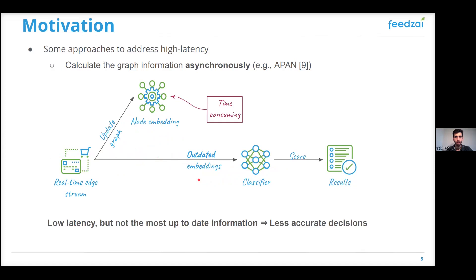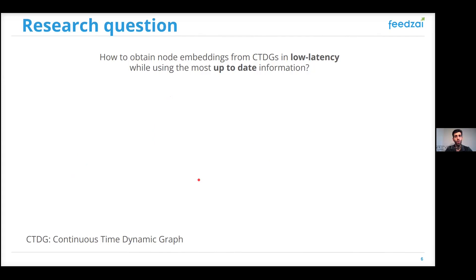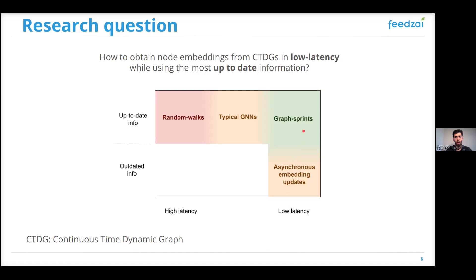So the research question here is, how can we obtain node embeddings from continuous-time dynamic graphs in low latency while using the most up-to-date information? And here comes our Graph Sprints method to fill the gap by obtaining embeddings in low latency while using the most up-to-date information.